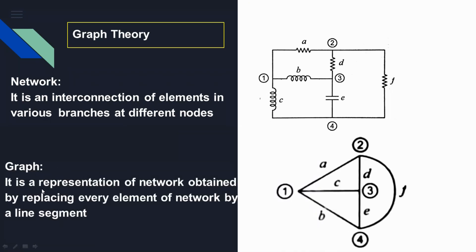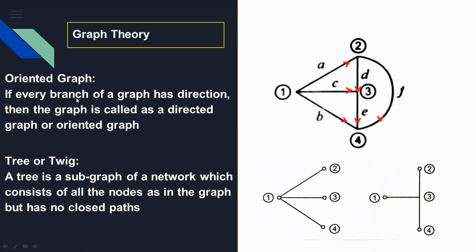The next topic is graph. What is meant by graph? It is a representation of a network obtained by replacing every element of the network by a line segment. Here these elements are just replaced by straight lines — A is replaced by a straight line, and similarly the remaining elements. This contains all nodes. The next is orientation graph: if every branch of the graph has a direction, then the graph is called a directed graph or oriented graph, indicated by arrow marks.